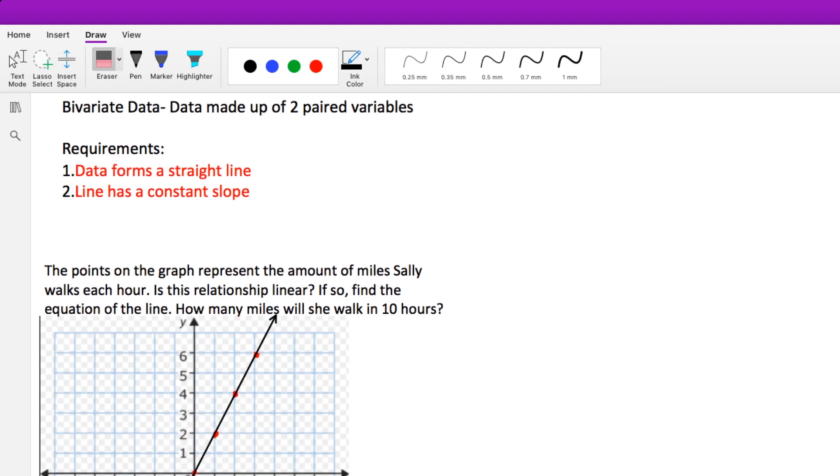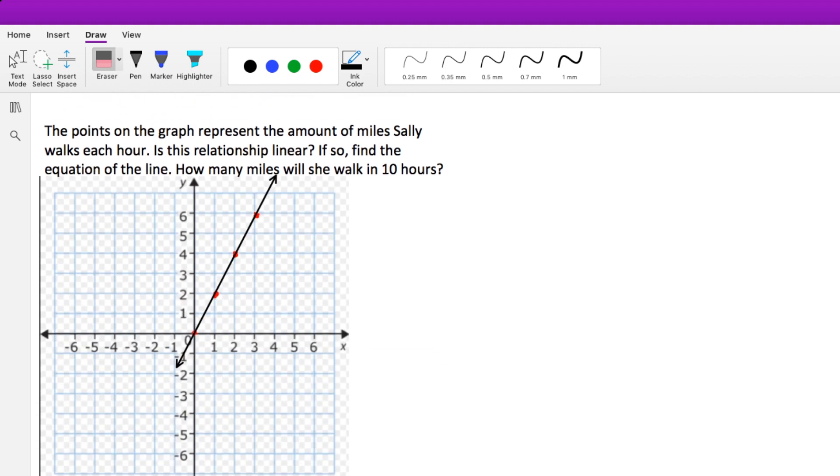Now, let's look at this problem. The points on the graph represent the amount of miles Sally walks each hour. Is this relationship linear? If so, find the equation of the line. How many miles will she walk in 10 hours? This problem is asking us to do a couple things. Is this relationship linear? That's one. If so, find the equation of the line. And third, how many miles will she walk in 10 hours?